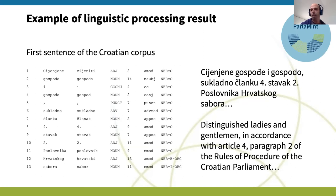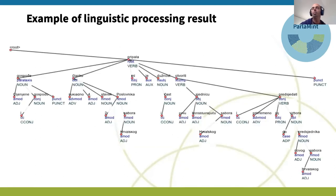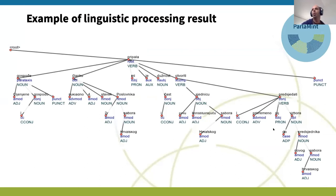For the syntactic dependency parsing, we use the universal dependencies formalism. This is a great project, especially because it allows us to describe the syntactic levels of all four languages in a very similar way. So if we translate this syntactic parse, this is 'distinguished ladies and gentlemen, in accordance with article four,' and so on — we get the syntactic structure of the whole sentence.